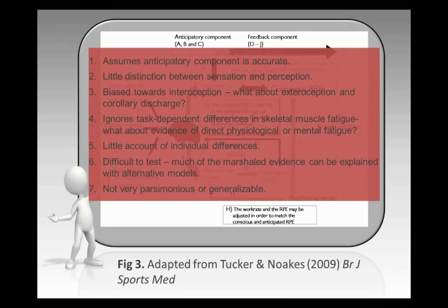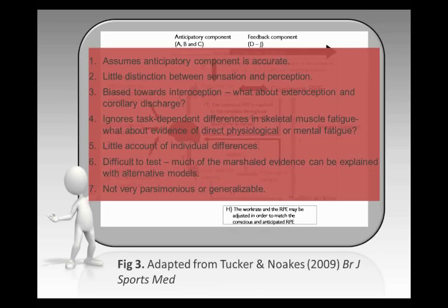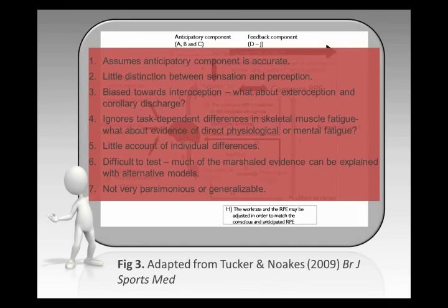But there are some things about central governor that do trouble me. One of them is in relation to this anticipatory component. A big focus of what I'm going to show you is about just how complicated a psychological process it is to be able to anticipate a future event — to think about how things might unfold in the future, what all the possible range of likely outcomes are, and then make a decision that will give you the best chance of coping with those unfolding circumstances. It's a very complicated psychological process that involves a lot of abstract thought.